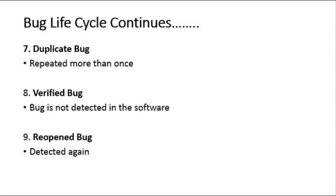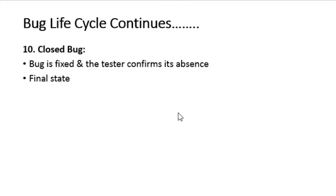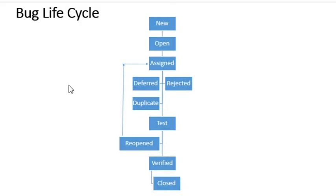Once the developer fixes the issue, the status will be Test. The tester will then verify that the bug is fixed in the release mentioned by the developer and move it to Verified. If the tester finds the bug is not fixed in that release, he will reopen it and assign it back to the developer, changing the status to Reopened. The last status is Closed — once the bug is fixed and the tester confirms its absence, the status is changed to Closed, implying the bug is fixed, tested, and resolved.